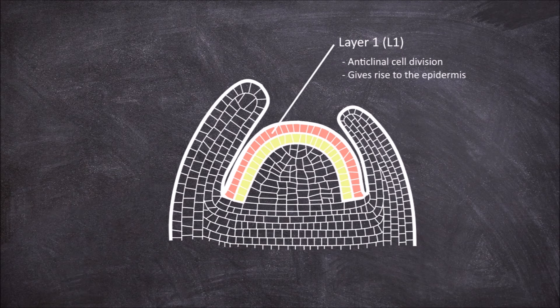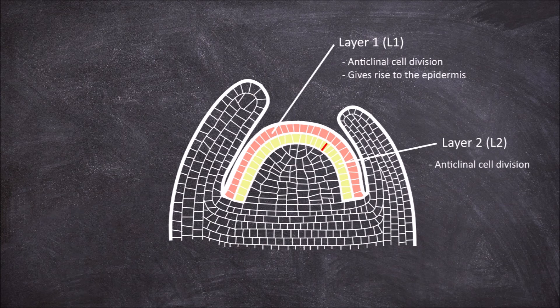The next layer in is layer 2. Cell division in this layer is also anticlinal. Layer 2 gives rise to the internal tissues.